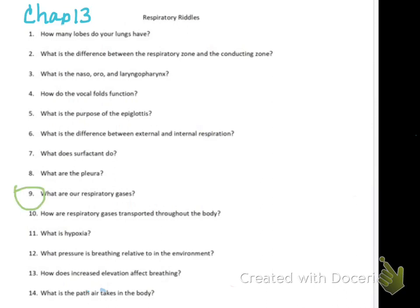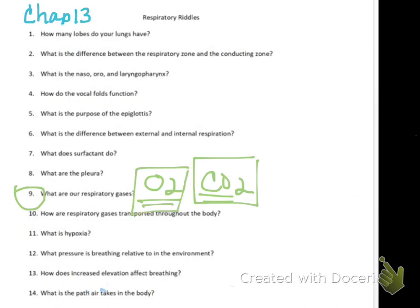What are our respiratory gases? That's probably the easiest question: oxygen is a respiratory gas and CO2 is a respiratory gas. We get oxygen from the environment and we make CO2 in our body as metabolic waste. Believe it or not, CO2 is actually the reason we breathe - it's toxic, and if it builds up our pH declines. If our pH becomes too acidic, our proteins denature and we can't function. Our oxygen levels have to get critically low before oxygen becomes the primary motivator for breathing rate and depth.